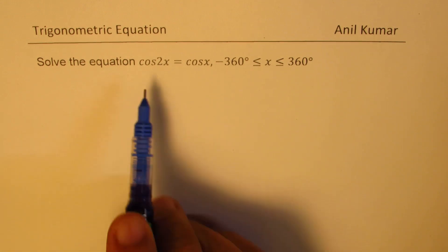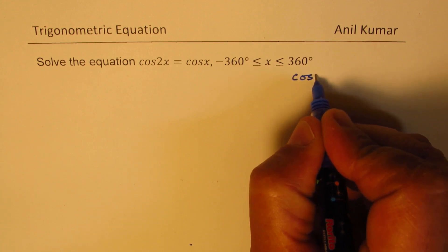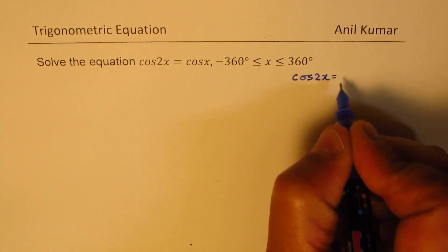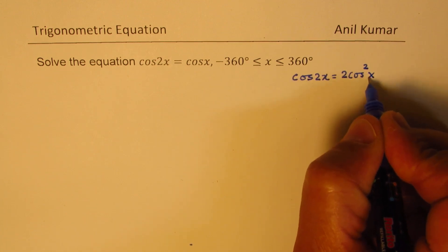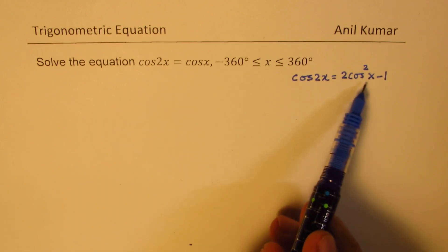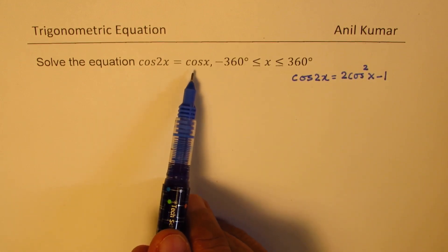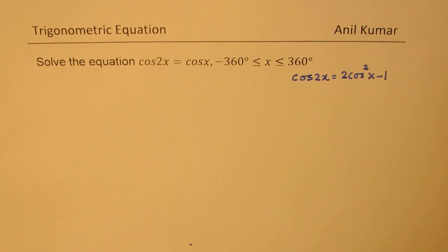Well, to solve this equation, you will need the formula, which is a double angle formula. Cos 2x can be written as 2 cos squared x minus 1. So this formula will be required. Once you write it in this form, you have a quadratic equation in cos x, which can be factored and solved. So that is the approach which we are going to follow.